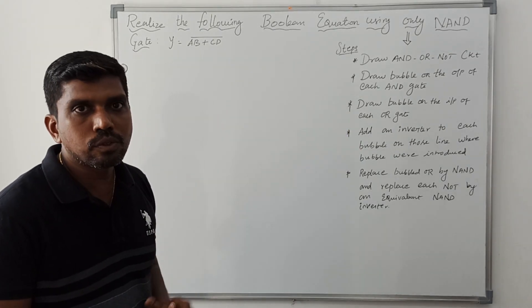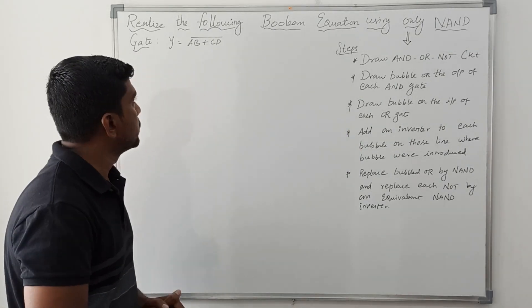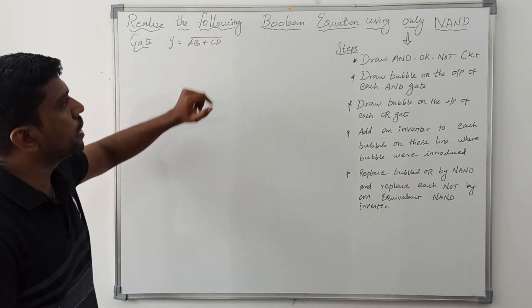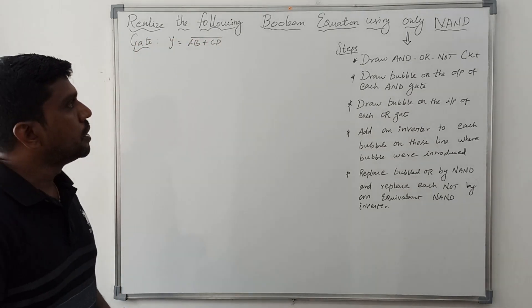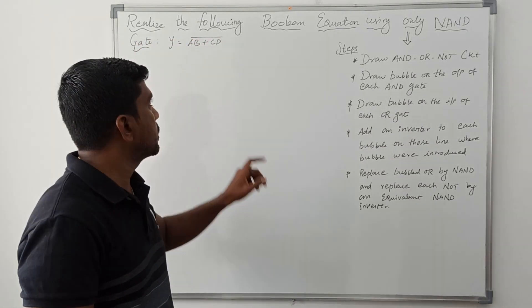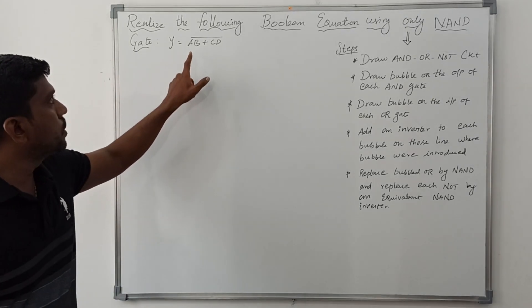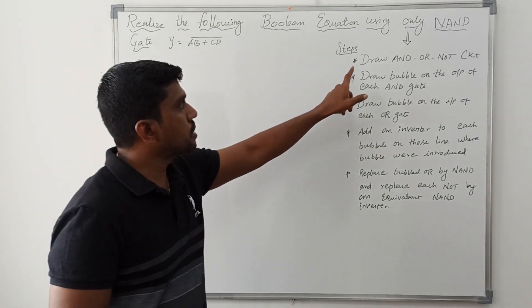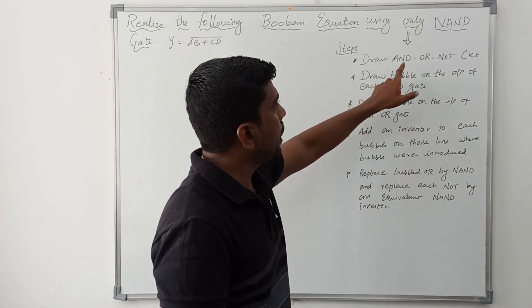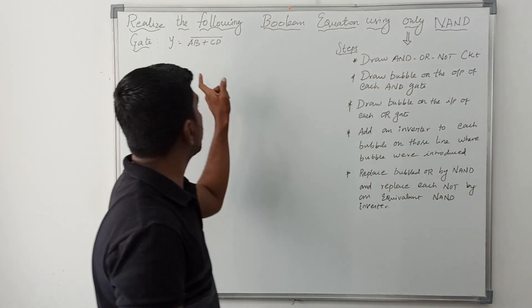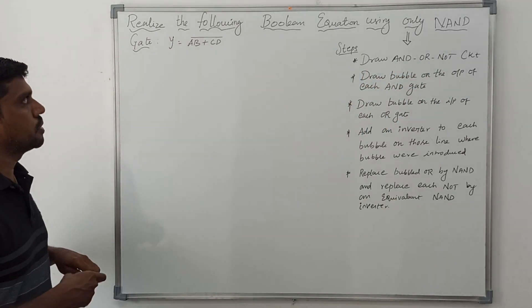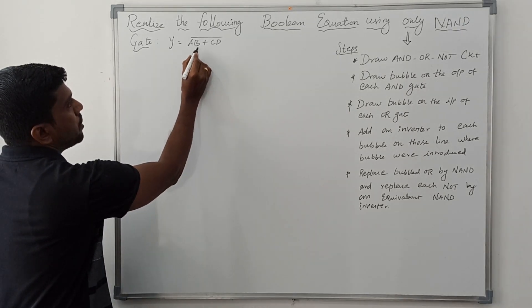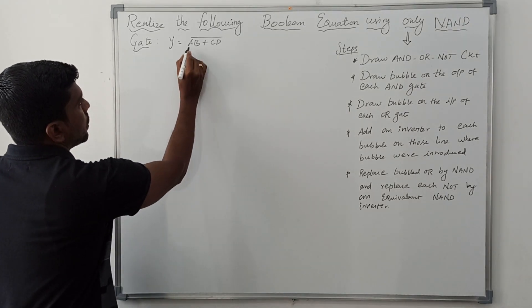Using these steps, now I am going to solve the problem. First I read the problem: Realize the following Boolean equation using only NAND gates. Y equals (AB + CD)'. So first step: draw AND-OR-NOT circuit for the given Boolean expression Y = (AB + CD)'.